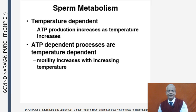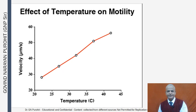Sperm metabolism is temperature dependent — ATP production increases as temperature increases, and ATP-dependent processes including motility are temperature sensitive. Motility increases with increasing temperature up to a limit of approximately 40–43 degrees Centigrade.